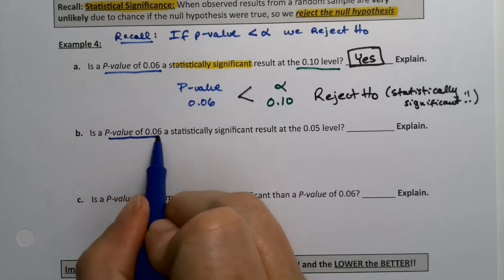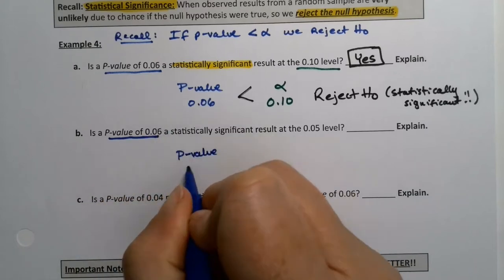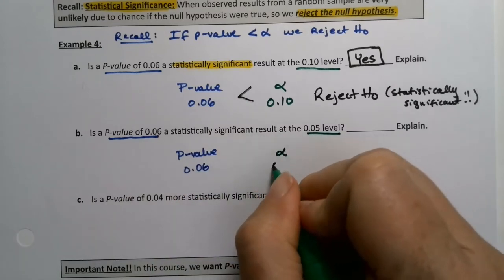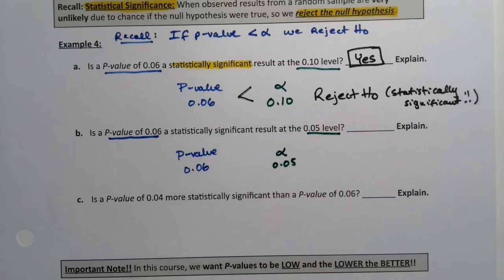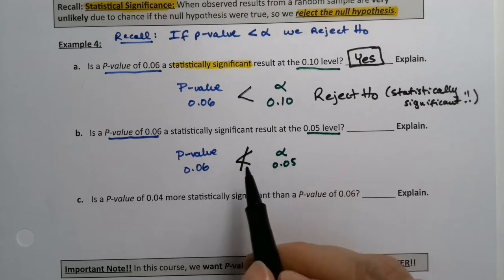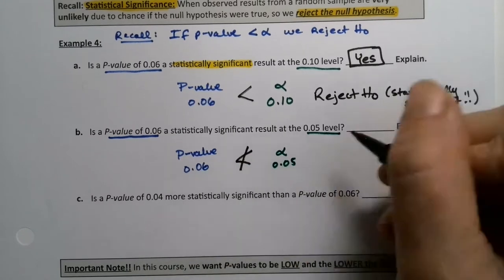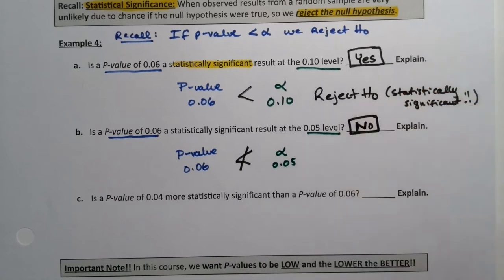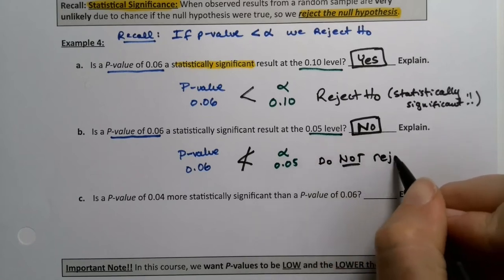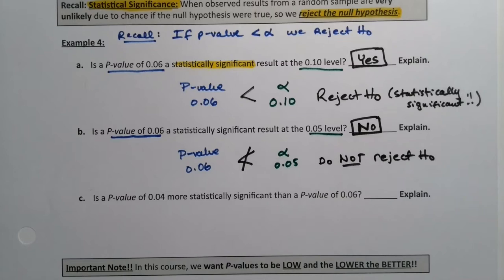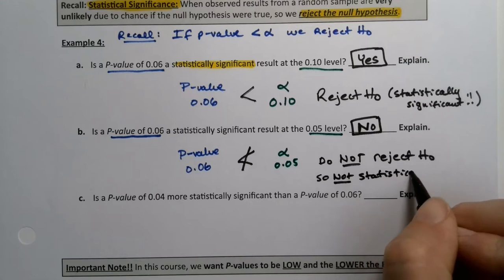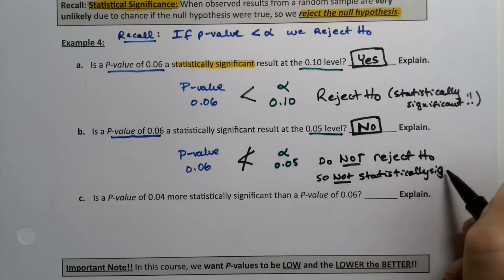What if my p-value was still 0.06, but my alpha was 0.05? Well, 0.06 is not less than 0.05 — put a big slash through it, or use a greater-than sign. So this would be no, that is not statistically significant because you do not reject H-naught. So the first case was yes, statistically significant because you got to reject H-naught. This one is not statistically significant because we did not get to reject H-naught.